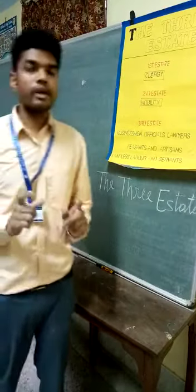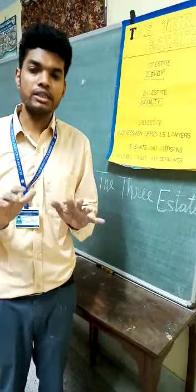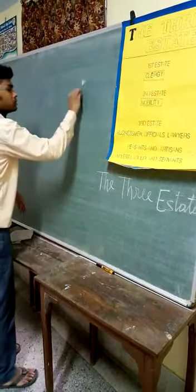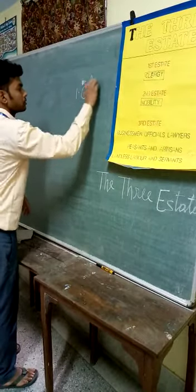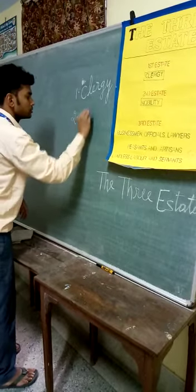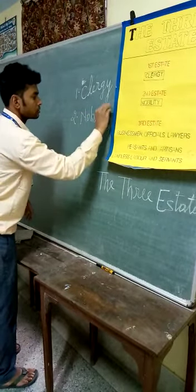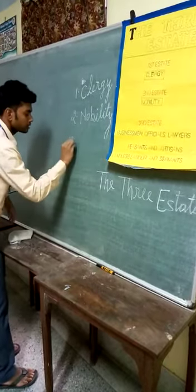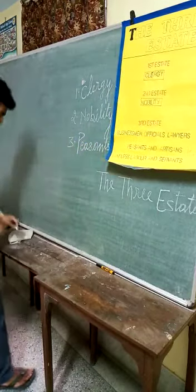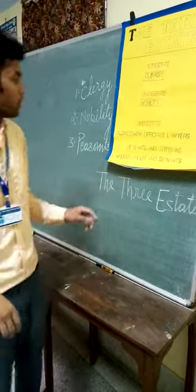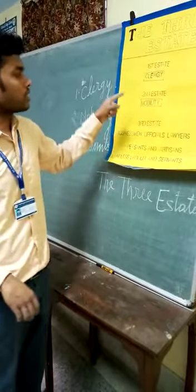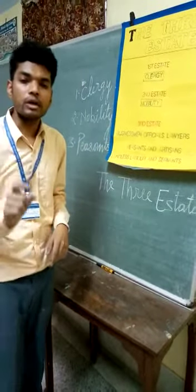Before the French Revolution, the French society was divided into three categories — namely clergy, nobility, and a third group. We can see these three groups, and among these, clergy and nobility were the dominating groups.